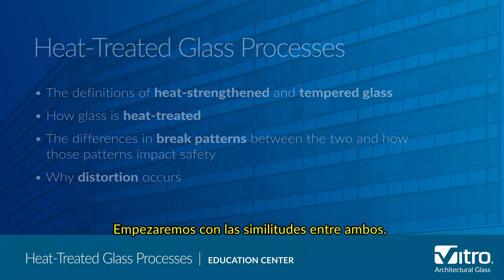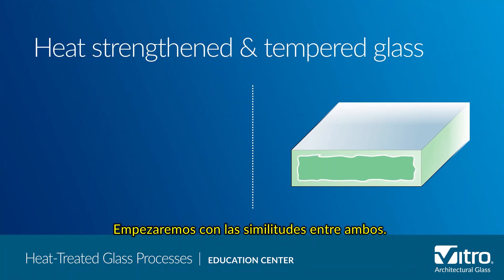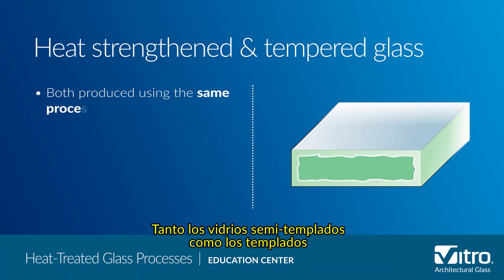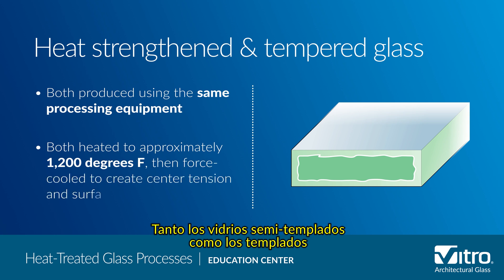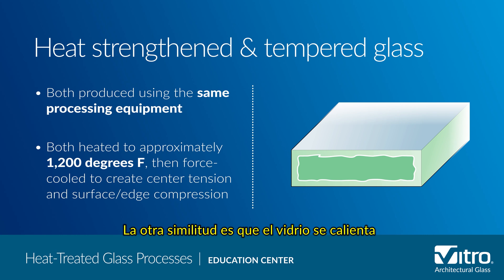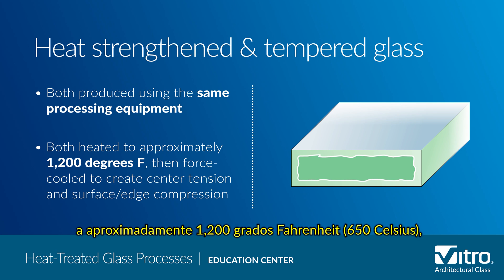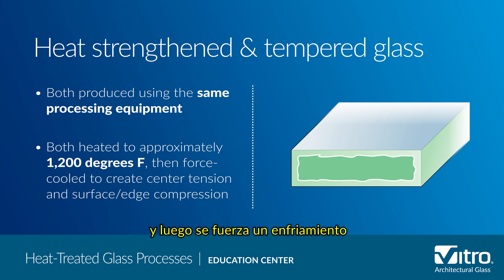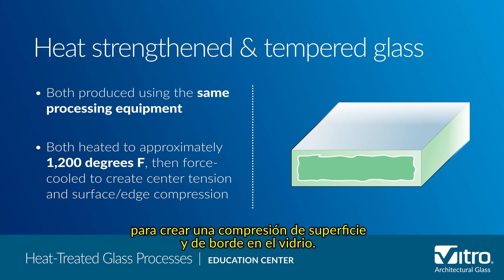We'll start with the similarities between the two. Both heat strengthened and tempered glasses are produced using the same processing equipment. The glass is heated to approximately 1,200 degrees Fahrenheit, then force-cooled to create surface and edge compression in the glass.